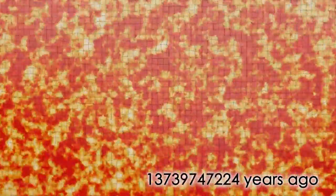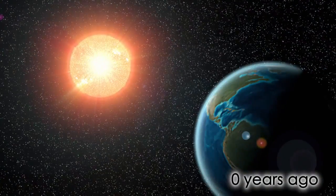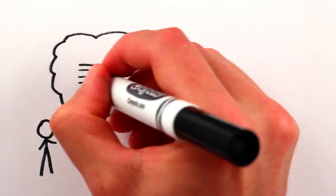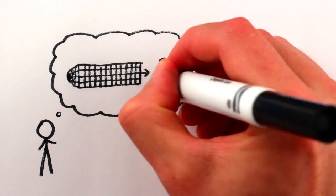But once time began, whenever that was, space expanded incredibly quickly all throughout the universe. For a little while. Then expansion slowed, the universe cooled, stuff happened, and after a few billion years, here we are. One thing we still don't know is why this everywhere stretching happened.